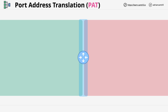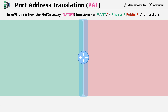It's how the AWS NAT gateway functions within the AWS environment. It has a many-to-one mapping architecture, so many private IPv4 addresses are mapped onto one single public IPv4 address.